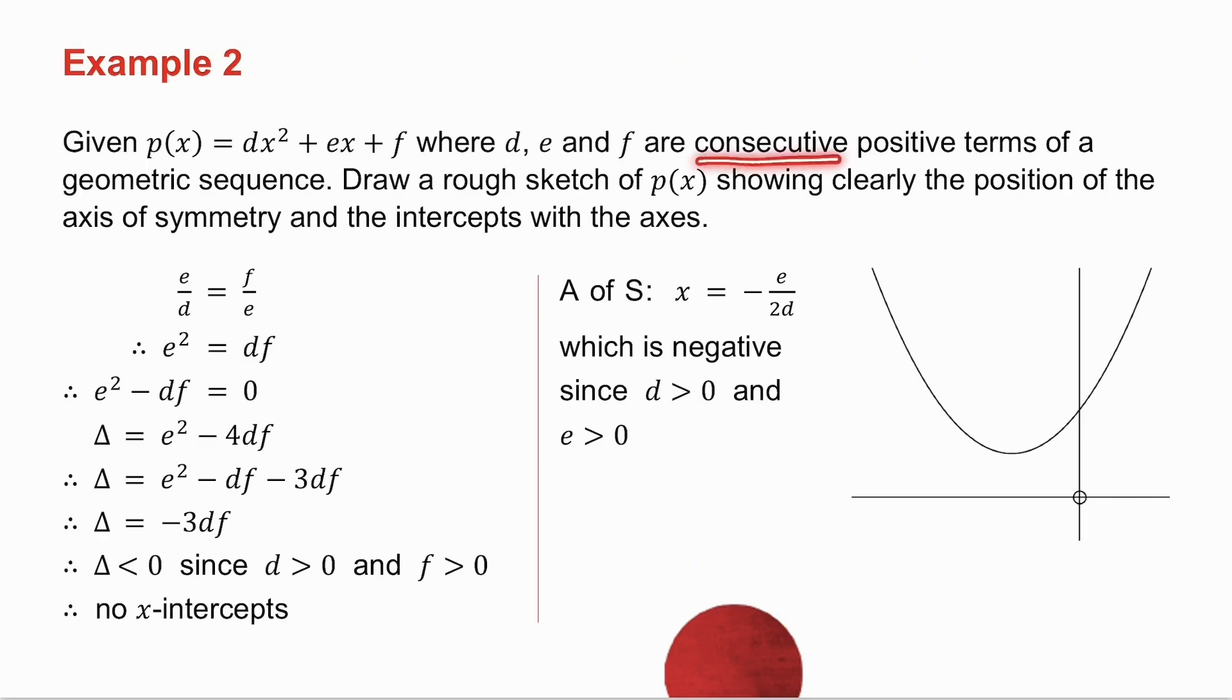All right. They've given me consecutive terms of a geometric sequence. So that means that E divided by D is the same as F divided by E because a geometric sequence has a constant ratio. Cross multiply and take it all to one side. And I get that E squared minus D F is equal to zero.